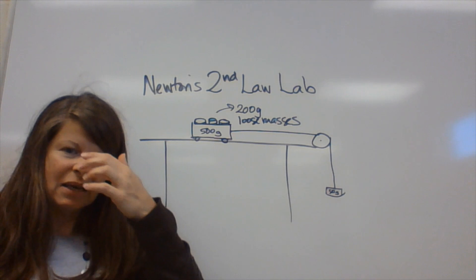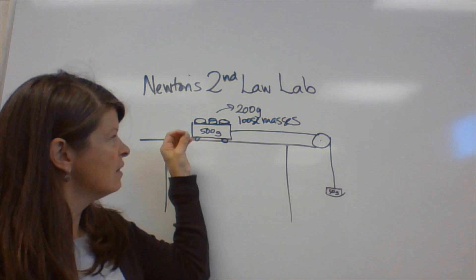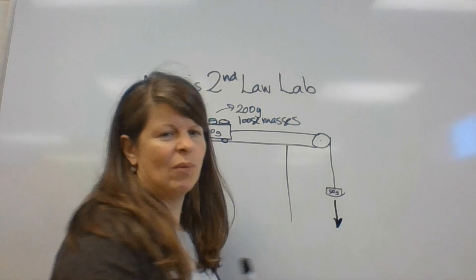These things are connected by a string and they're hanging over a pulley. This is let go, which means that this force, the force pulling this down, what force is pulling that down?